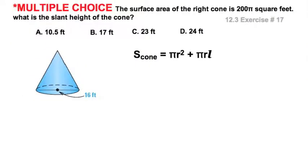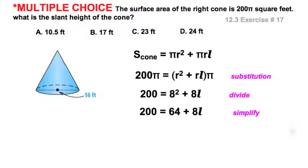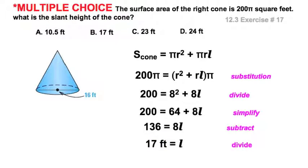Exercise 17 is a multiple choice problem where we work backwards, starting with the surface area of the cone. We are given 200π. We factor out pi on the right-hand side of the expression, making it easy to divide both sides by pi. We also substitute radius of 8, since we're given diameter of 16. Squaring the 8 and subtracting from both sides gives us 8 times the slant height equals 136. Dividing that out gives 17 feet — choice B.